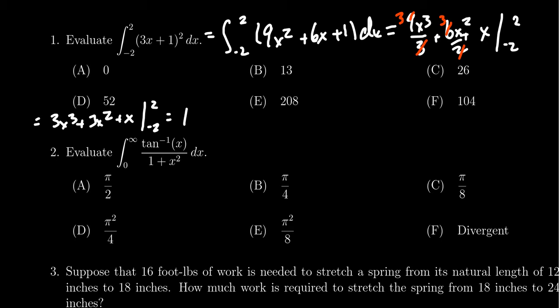So when you plug these things in there, you're going to get 3 times 2 cubed, which is going to be an 8. You're adding to that 3 times 2 squared, which is 4, plus a 2. Subtract from that, we're going to put a negative 2 in there. So you're going to get 3 times negative 8, you're going to get 3 times positive 4, and then lastly, you're going to get a negative 2.